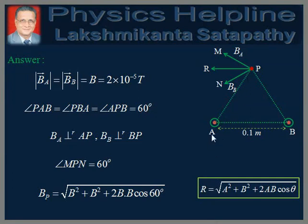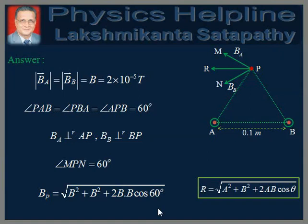The angle between PA and PB is equal to 60 degrees. Therefore, the angle between their perpendiculars — that is, PM and PN — is also equal to 60 degrees. Therefore, the angle between the two magnetic field vectors BA and BB is also equal to 60 degrees, so angle MPN equals 60 degrees.